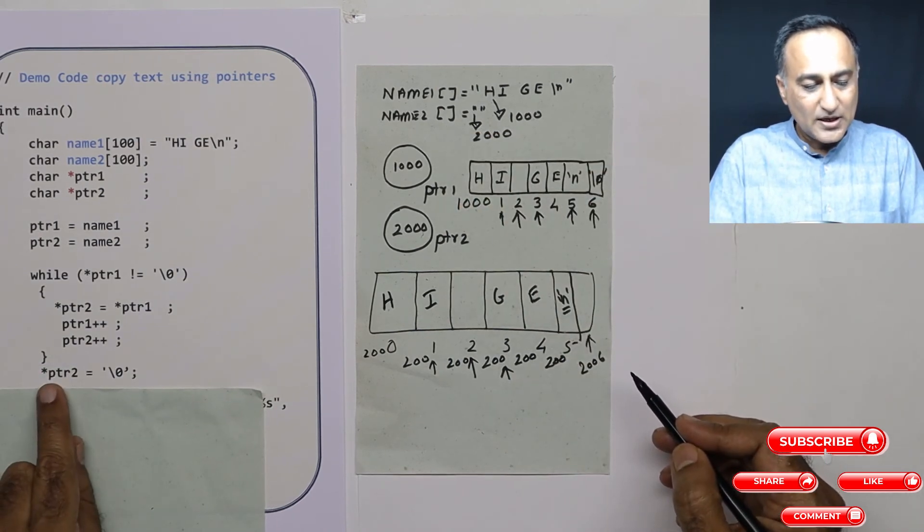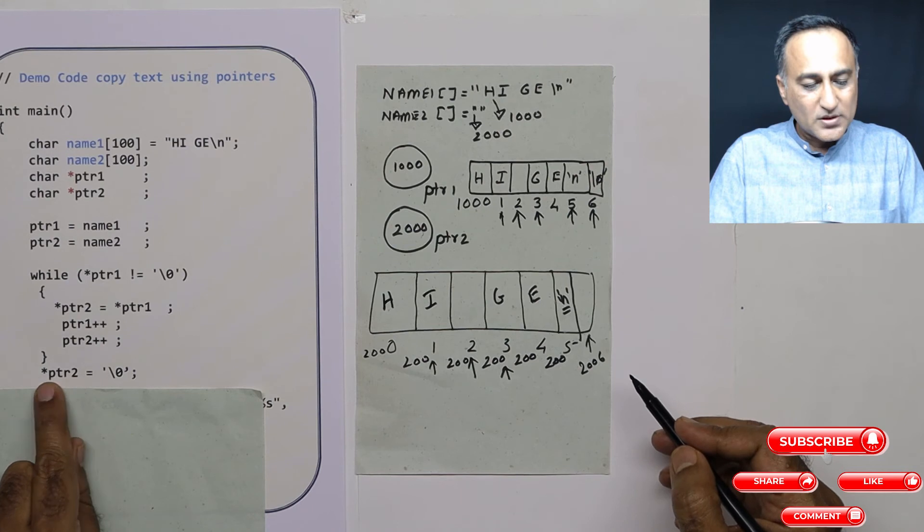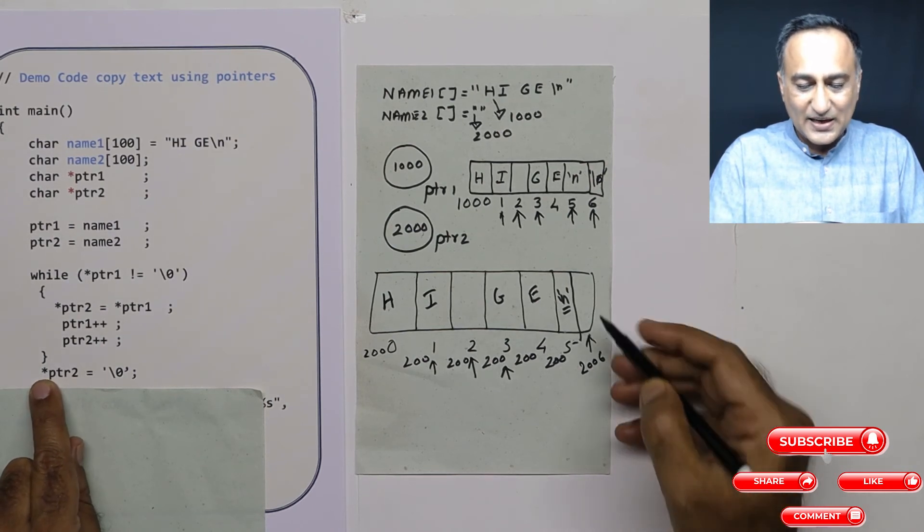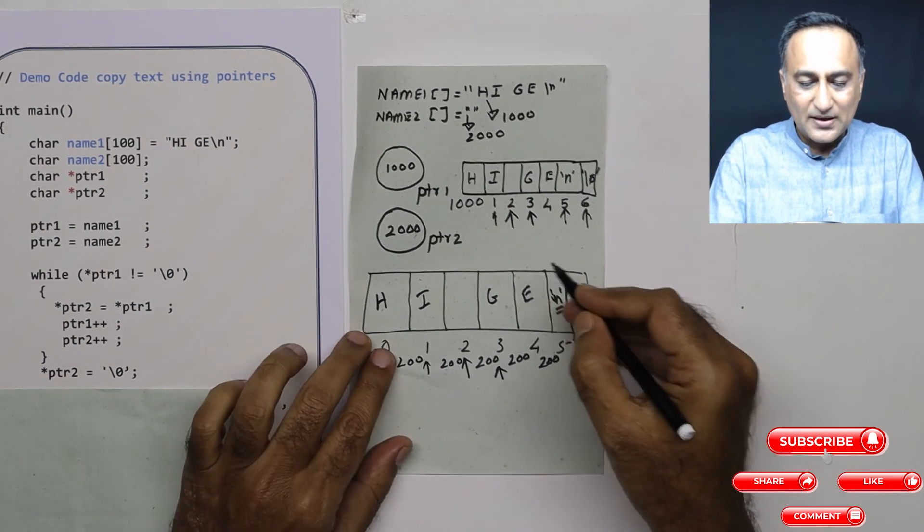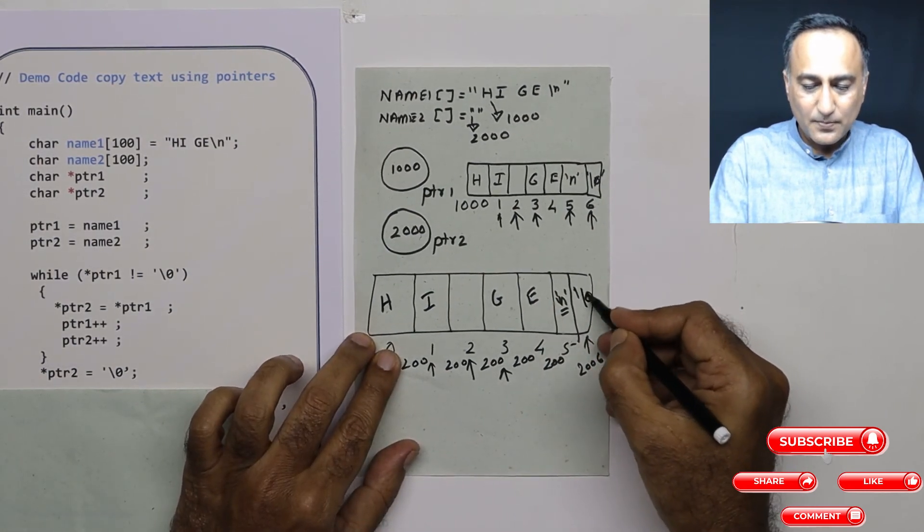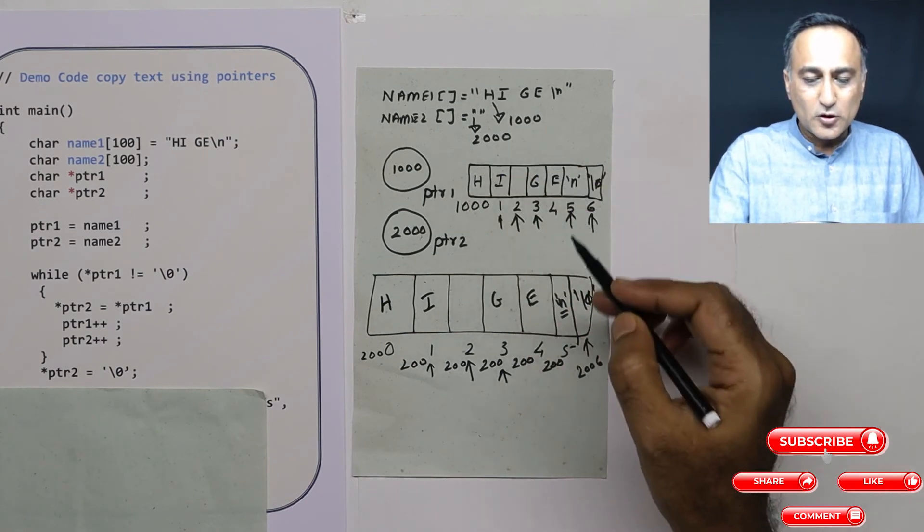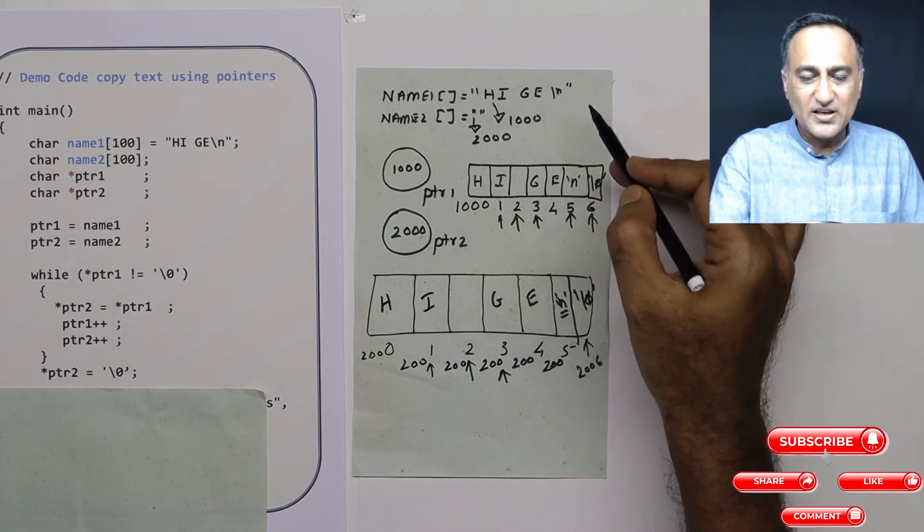So what I am doing here is ptr2, star ptr2. ptr2 is 2006. At that particular location, I am putting a null character. I am putting a null character, and name2 is also going to have h, i, g, e, slash n, null character.